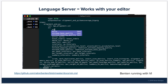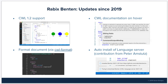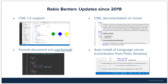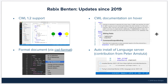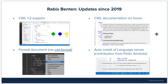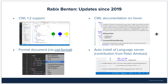Because it is a language server, it works with a variety of editors — here is a screenshot of Benten running with the VI editor. Since 2019, which was the last time there was a talk on Rabix Benten, there have been a number of updates: we now have CWL 1.2 support, format document via the CWL format program, and CWL documentation on hover, so hovering over a CWL keyword or field shows documentation from the specification. Thanks to a contribution from Peter Amstutz, we also have auto-install of the language server for VS Code — Benten will automatically detect the correct server version for your operating system and download it from GitHub.